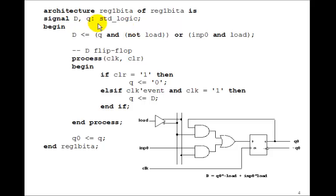So then in the architecture, we've got a signal D and Q. And we just write the logic equation for D from here. So D is just Q and not load, or input 0 and load.